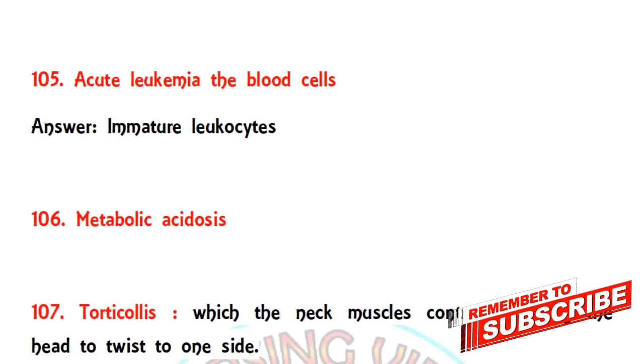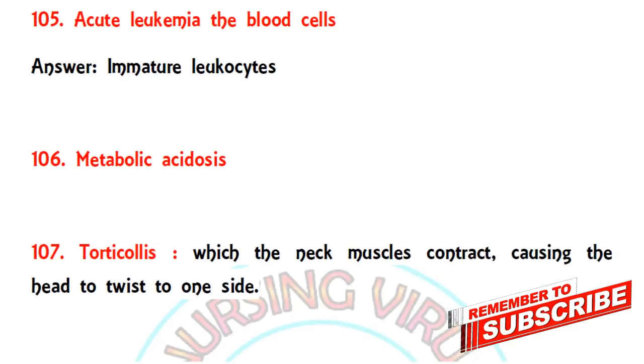Question 105: in acute leukemia, the blood cells consist of what? The correct answer is immature leukocytes.